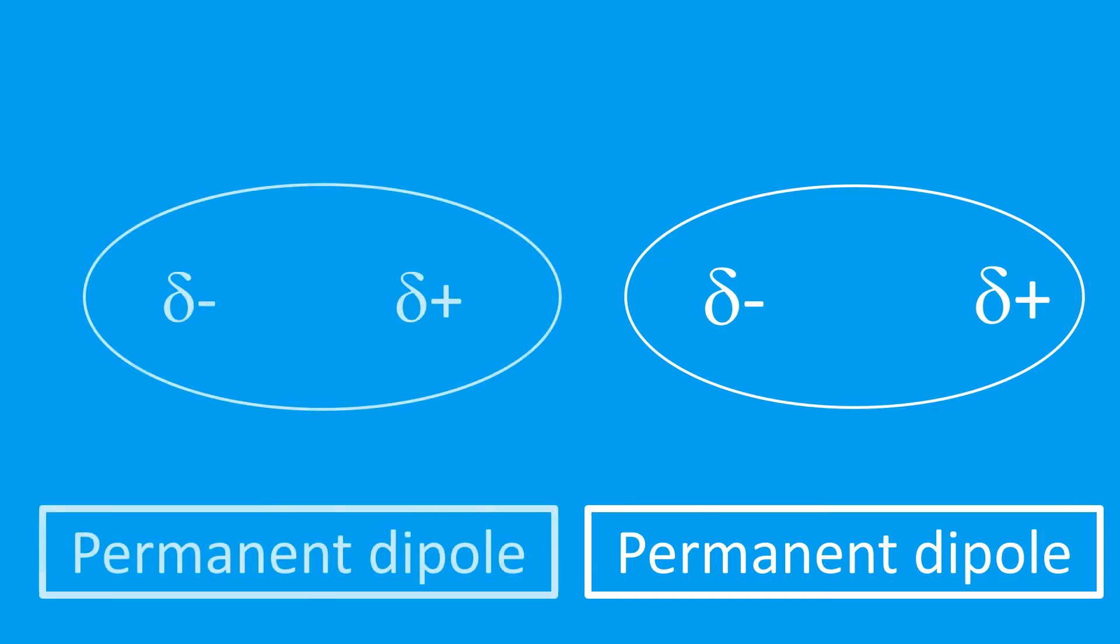Now if I draw another molecule next to it, I've now got two permanent dipoles on two separate molecules.